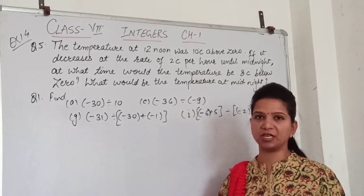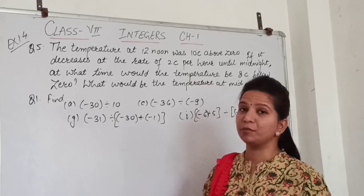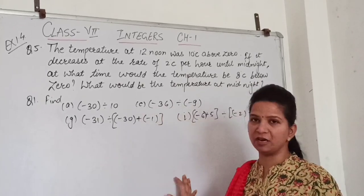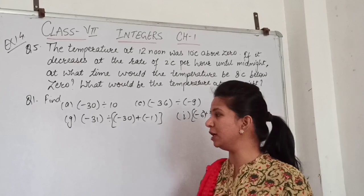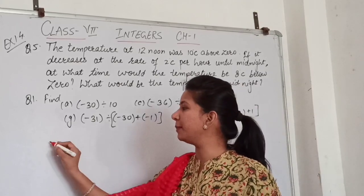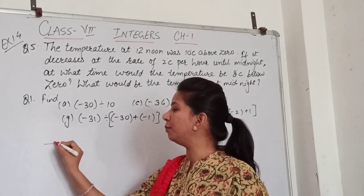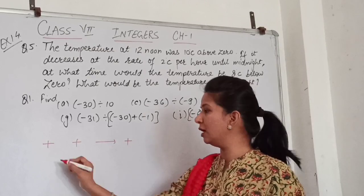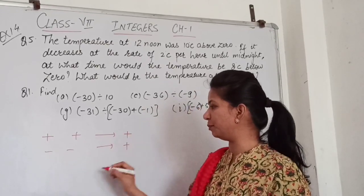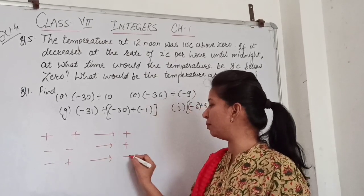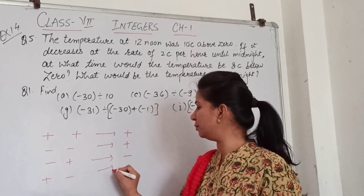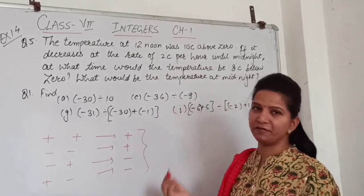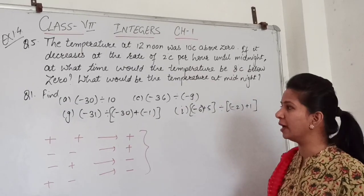How do you do division? Just as you have rules in multiplication, you have division. It is very simple. We have the sign rule: plus plus you will get plus, minus minus again you will get plus. Minus plus will be minus and plus minus will be minus. The same rules you apply for division.